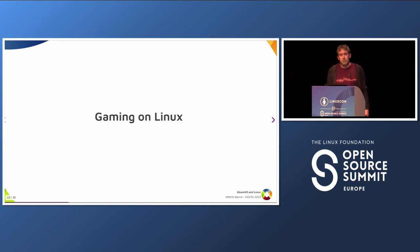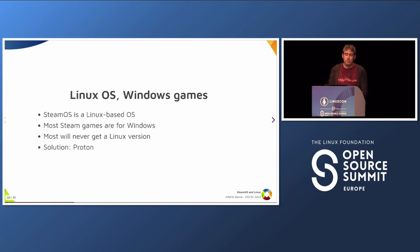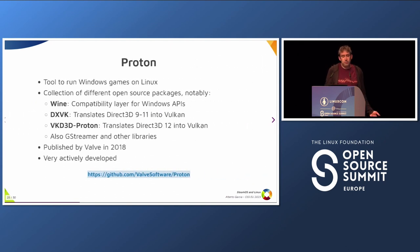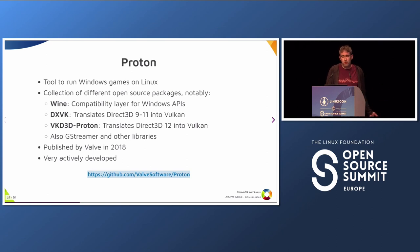The main use case of the device is to play games on Linux. There's a problem though: SteamOS is Linux-based, but most games — most Steam games — are for Windows. Most will never get a Linux version because either developers won't port them or they are too old to be updated. The solution for this is Proton. Proton is a tool to run Windows games on Linux, developed by Valve and published in 2018. It's a collection of different open source packages. The most important ones are Wine (the Windows compatibility layer) and a couple of projects that translate Direct3D calls into Vulkan, plus GStreamer and other libraries.